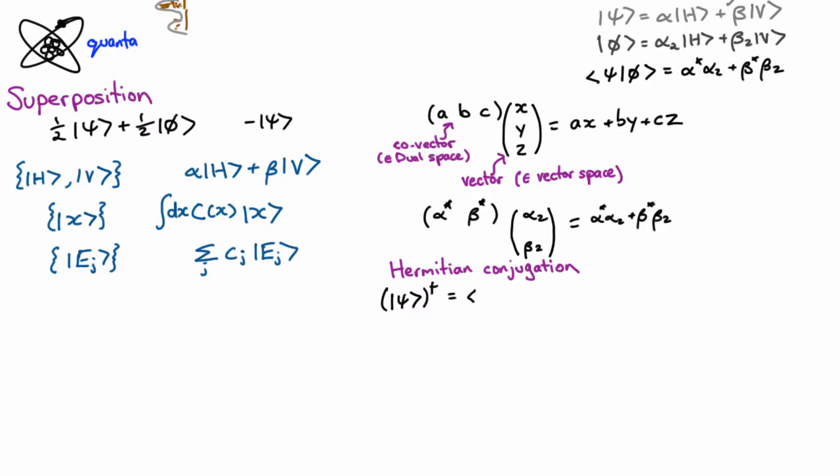we denote with this symbol, which is raised to a dagger, and that's just equal to this object here, the co-vector. Now because of their tendency to form brackets like that, we call this a ket and that's a bra, bra ket. There we go. I apologize for my discipline's sense of humor.